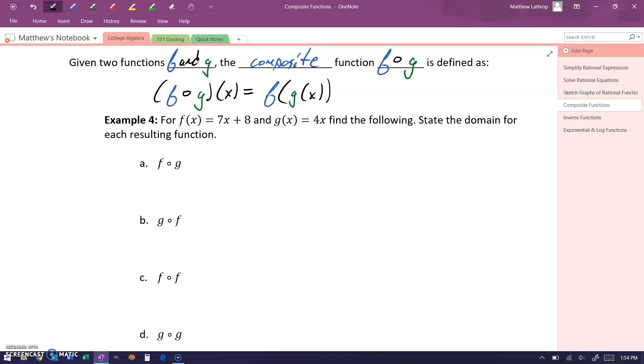In example four, then, what we want to do is start off by first finding f of g, meaning essentially what we want to do is take our function f and evaluate it at 4x, since that's our function g of x. This would give us seven times that quantity 4x plus eight, or 28x plus eight.